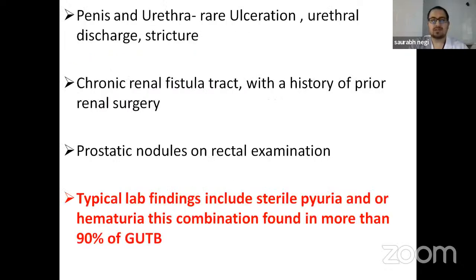Penis and urethra: rarely there is ulceration, urethral discharge, and strictures. In the kidney, chronic renal fistula with a prior history of renal surgery and prostatic nodules on rectal examination. The typical lab finding includes sterile pyuria and/or hematuria, a combination found in more than 90% of GUTB cases.